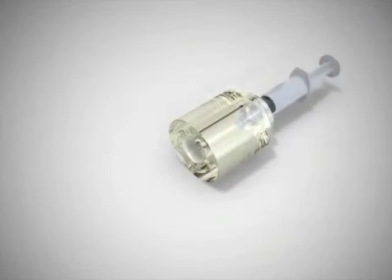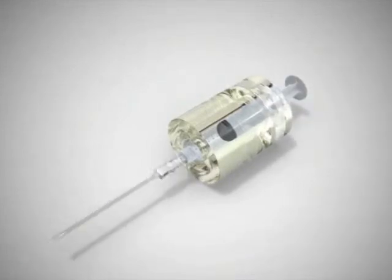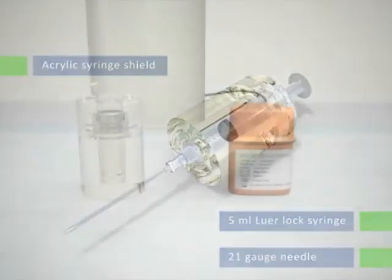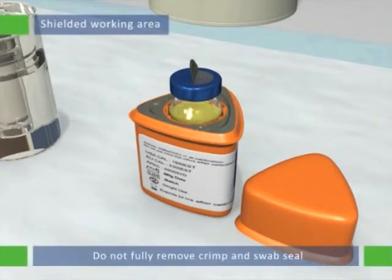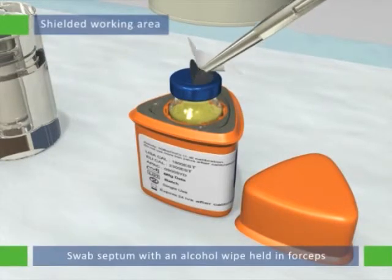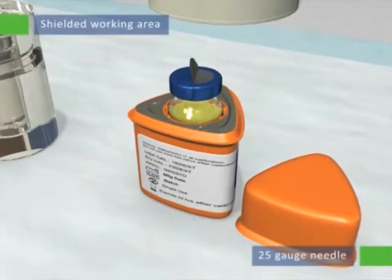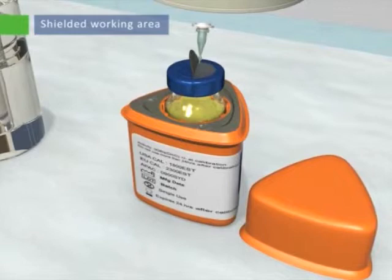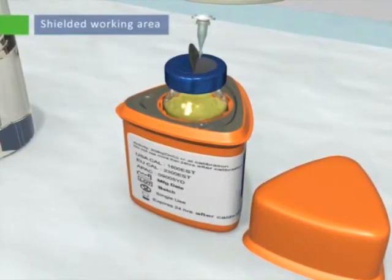Place a 5-milliliter luer lock syringe into the provided acrylic syringe shield and screw the lid on to secure the syringe. Attach a lubricated 21-gauge needle at least 50 millimeters in length to the syringe, leaving the needle cap attached to the needle. Partially remove the center of the aluminum crimp seal from the SIRSPHERES Microspheres shipping vial with alcohol-disinfected forceps to expose the septum. Do not fully remove the crimp seal. Swab the septum with an alcohol wipe held in forceps and dispose of the alcohol swab in the appropriate radioactive materials waste container. Insert a 25-gauge needle through the septum of the shipping vial to create a vent, ensuring that the needle is well clear of the contents of the shipping vial. It is recommended that either a purpose-designed venting needle or a separate filter attached to the short 25-gauge needle is used in order to prevent fluid leakage.